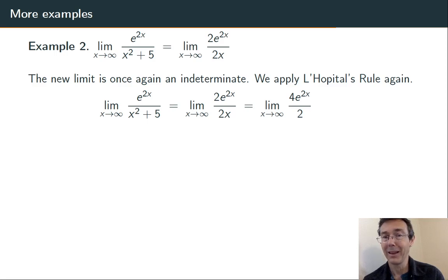Of course, there's nothing that says we can't apply L'Hopital's rule again, and so we should do that. We differentiate the top again, we differentiate the bottom again, and we get the limit as x goes to infinity, 4e to the 2x over 2, which is just going to be infinity. The numerator is growing without bound, the denominator is staying constant at 2. So, overall, the fraction is going to grow without bound.